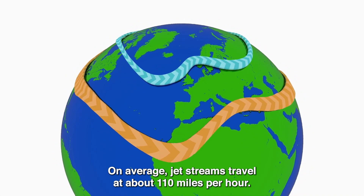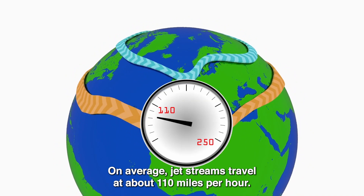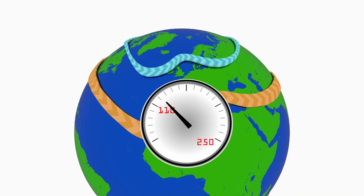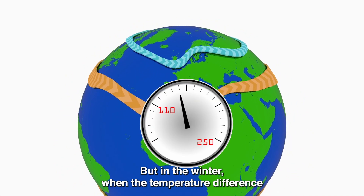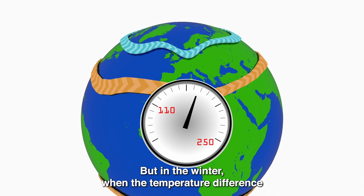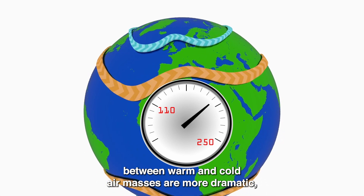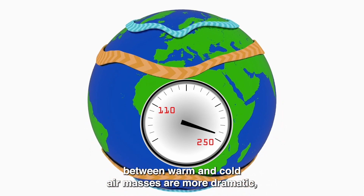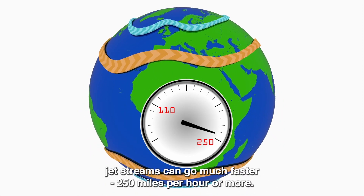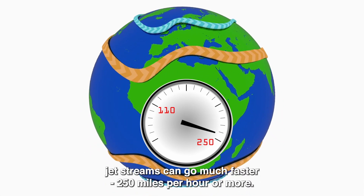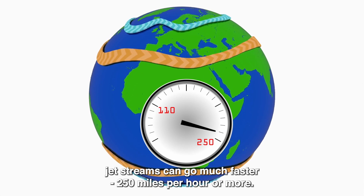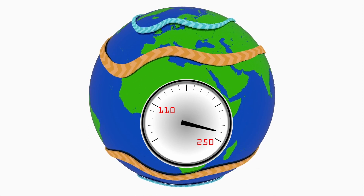On average jet streams travel at about 110 miles per hour, but in the winter when the temperature difference between warm and cold air masses are more dramatic, jet streams can go much faster — 250 miles per hour or more.